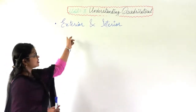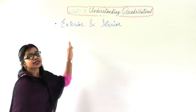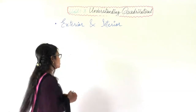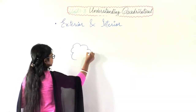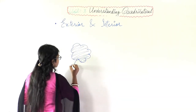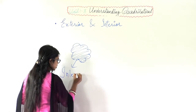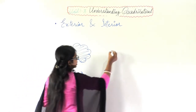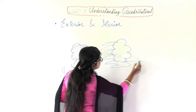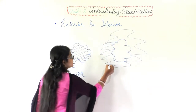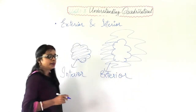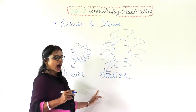The next topic is interior and exterior. Exterior means outside, and interior — the word 'in' suggests inside. Suppose I am drawing a curve — the inside portion is the interior of the curve, and the outside is the exterior part of the curve. Interior means inside; exterior means outside.